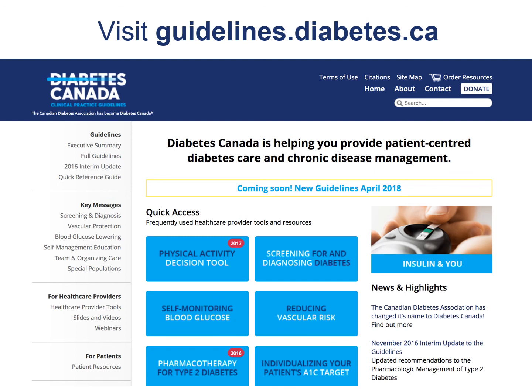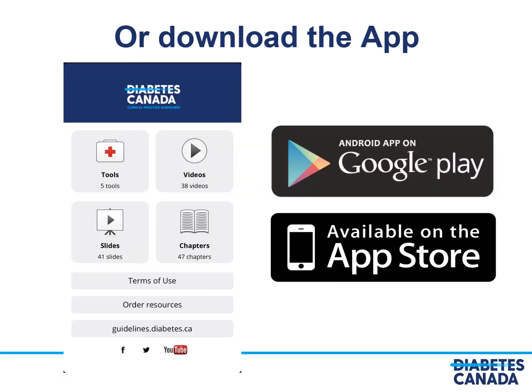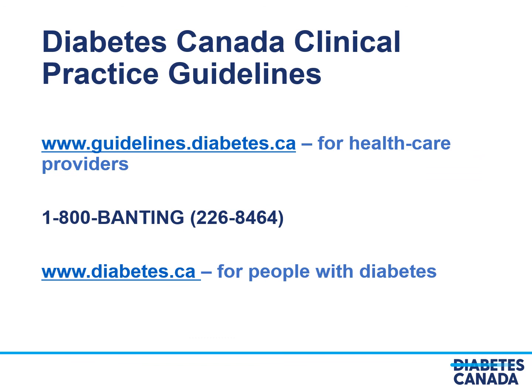For further information, please visit guidelines.diabetes.ca for a comprehensive overview of diabetes care, or download the app available on Google Play or the Apple App Store. Information for healthcare providers is also available at www.guidelines.diabetes.ca or by calling 1-800-BANTING (1-800-226-8464). For people with diabetes, you can access www.diabetes.ca.